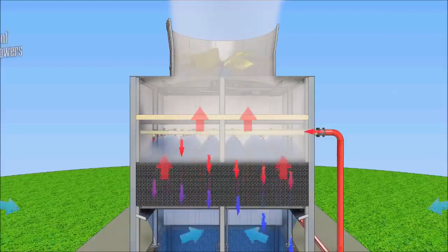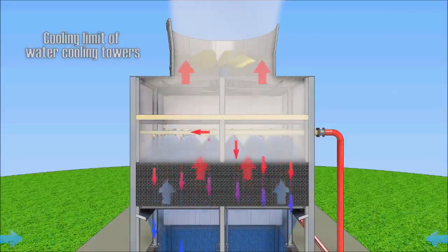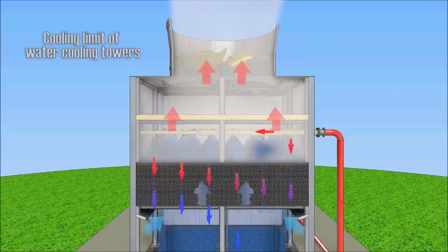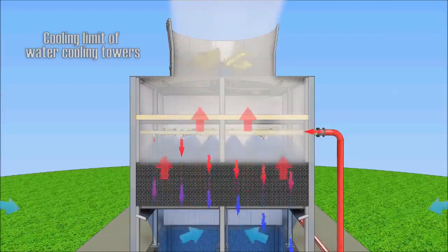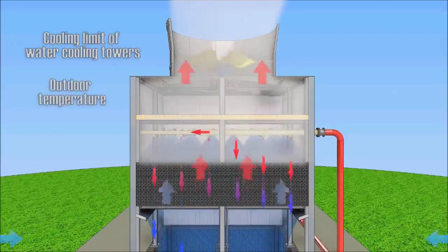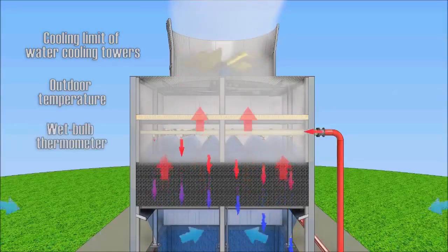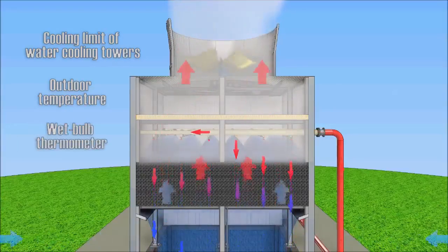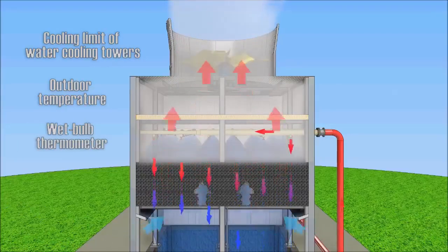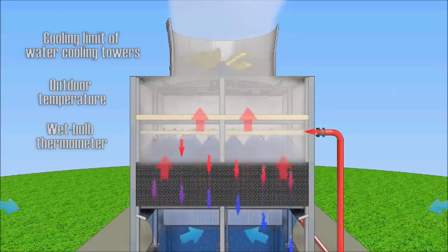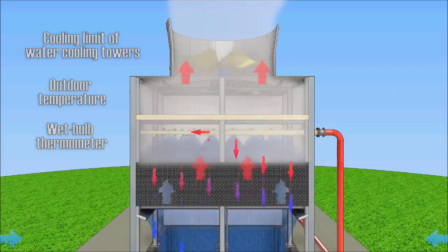There is a theoretical ideal energy loss involved in converting water to steam. The limit of cooling water in the cooling tower is the temperature of the outside air wet bulb temperature.